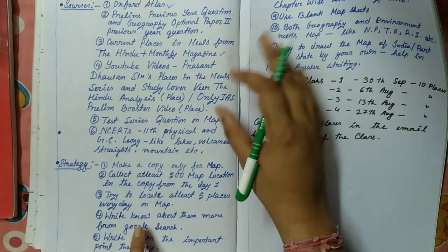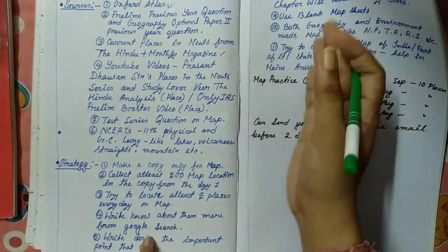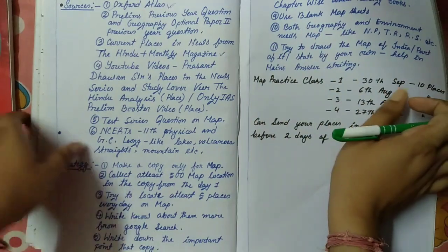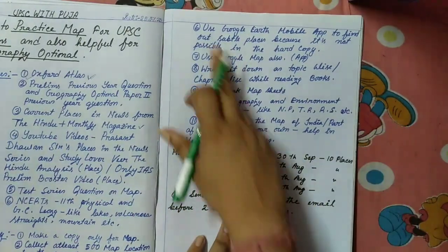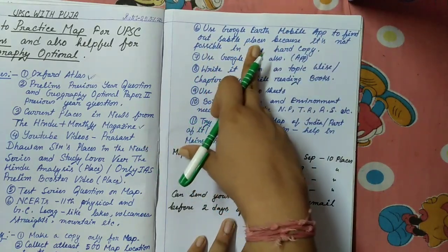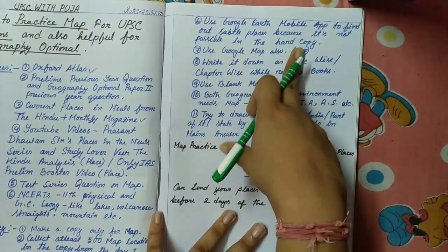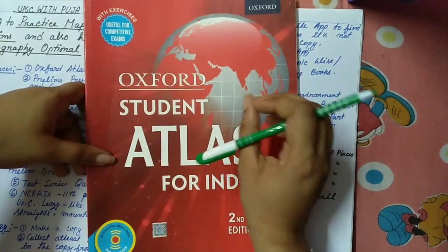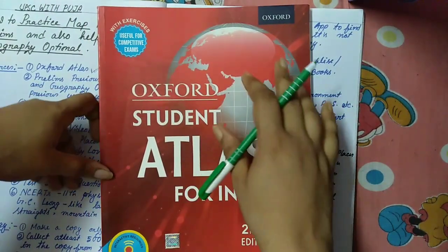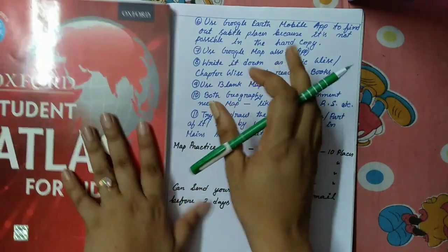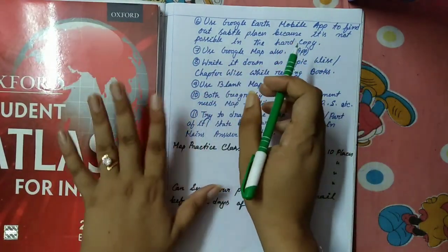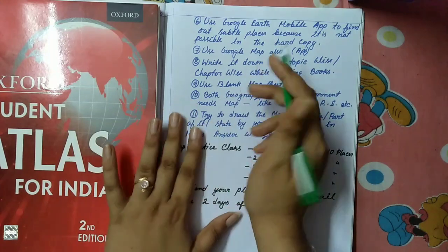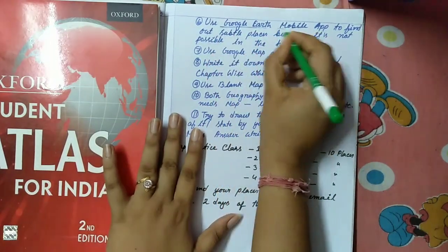Strategy number four: write down the important points in your map copy. Go to Google, search the topic, make short notes, and write the key points in the copy. Strategy number five: use the Google Earth mobile app to find subtle places, because it's not possible to zoom into a hard copy book. Zooming is very important in map practice, and that's not feasible with a physical book.